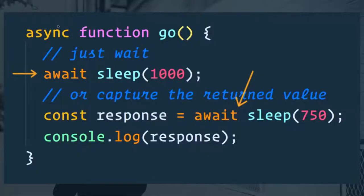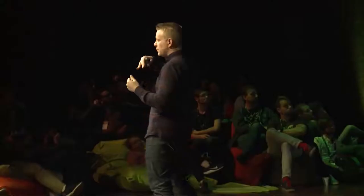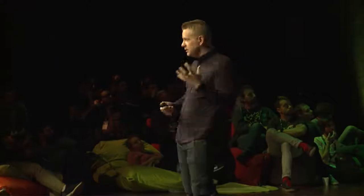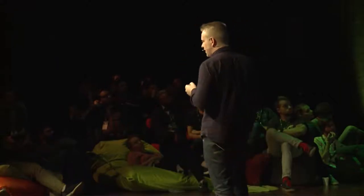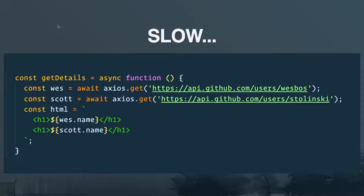When you're inside of an async function you simply await things inside of it. You can either just await the sleep function and it will wait until the promise resolves, or if you care about what's coming back from that promise — maybe it's some data from an API — then we can store that in a variable. It's really the best of both worlds.